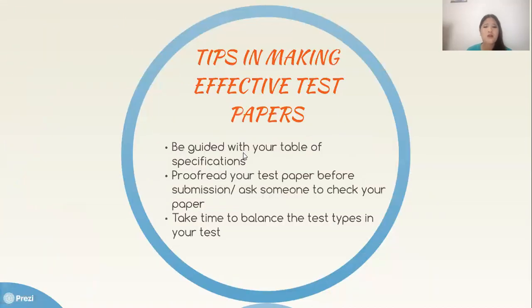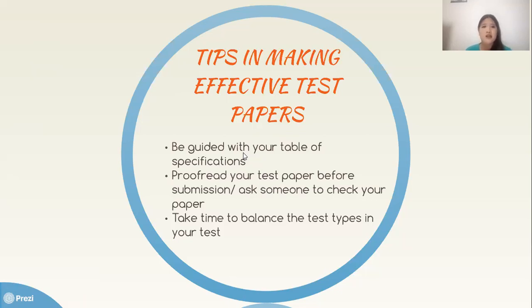Next are tips in making effective test papers. Be guided by your table of specifications and consider the format that your school uses. Proofread your test paper before submission, or ask someone to check it, because even if you're good at grammar, over-familiarity with your own paper makes it easy to overlook mistakes. Take time to balance the test types — it would be better to have 10 to 20 items per test type, rather than only 10 multiple choice items and 50 for enumeration.